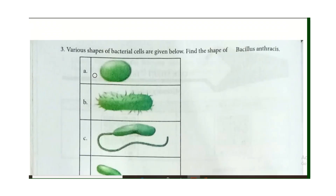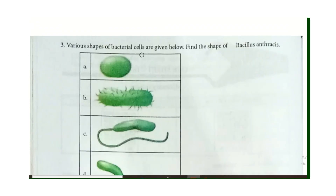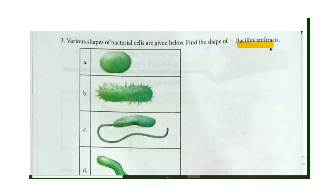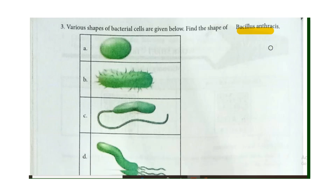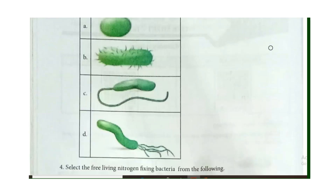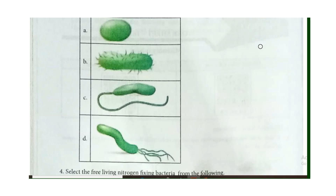Next, various shapes of bacterial cells are given. Find out the shape of Bacillus. Bacillus is a rod-shaped bacterium. So the correct answer is option B — this is a rod-shaped bacterium.